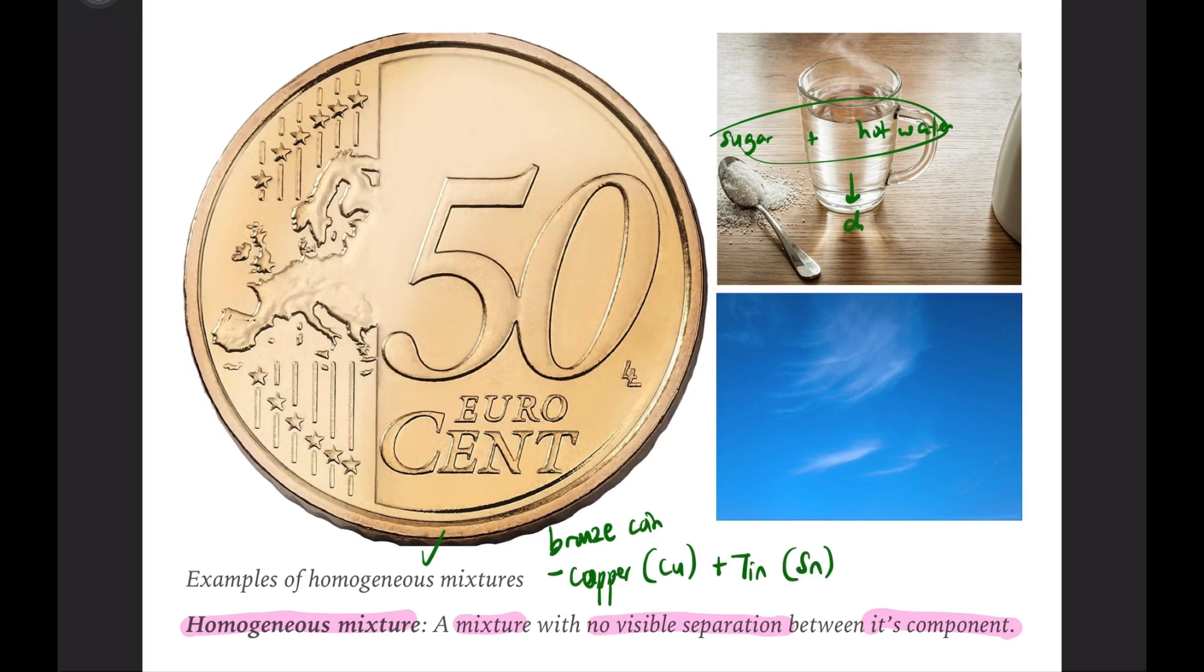And last but not least, look at one more example in this picture. What do you see here? We see clear sky, air. The air contains many different gases.